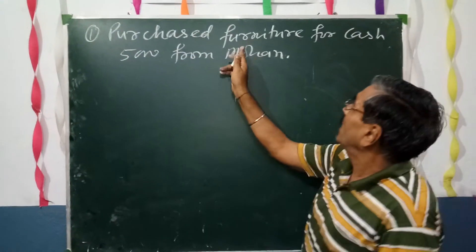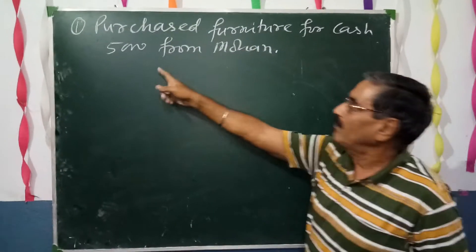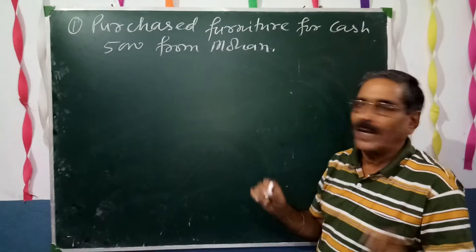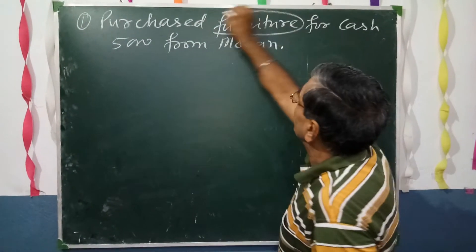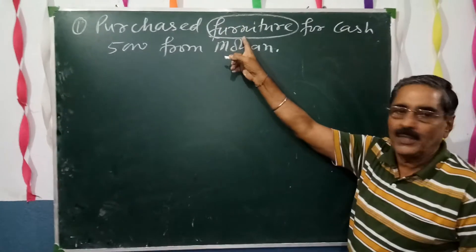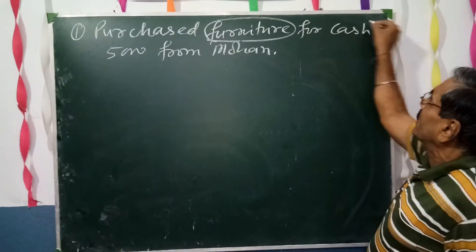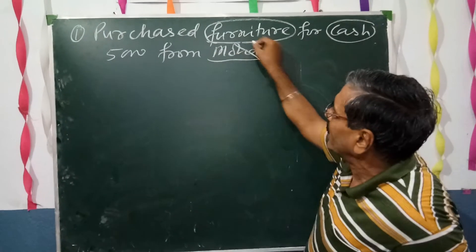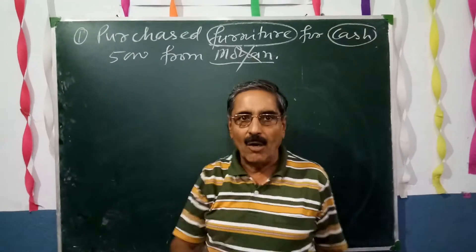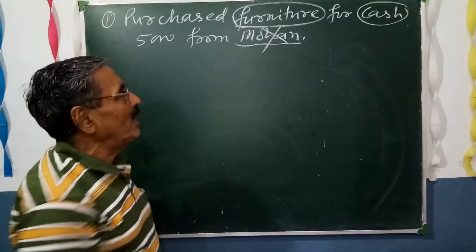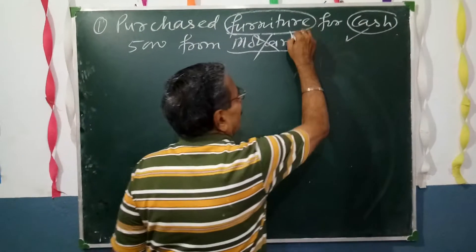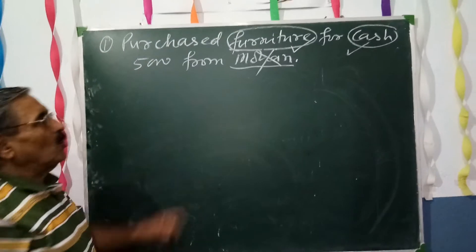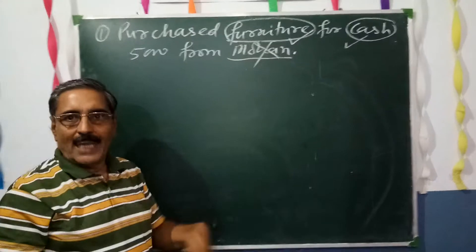First question: purchase furniture for cash ₹5000 from Mohan. We understand the question — we have purchased furniture, so the first item is furniture. We have purchased it for cash ₹5000. From Mohan, we are nowhere concerned with Mohan, because we have paid cash and purchased furniture.